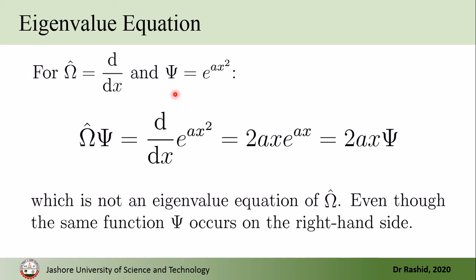Now for e^(ax²), doing the same gives 2ax·ψ. Now 2a is a number but x is a function, and x·ψ is also a different function. Therefore when this operator acts on the function we have a number multiplied by a different function, so ψ is not an eigenfunction of this operator.